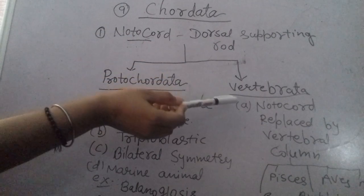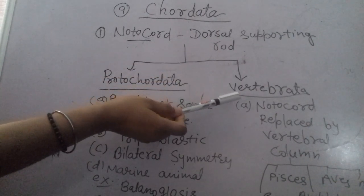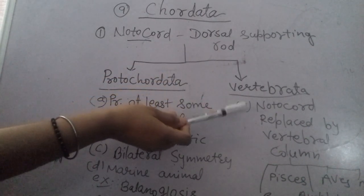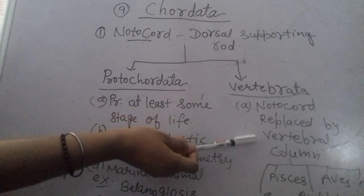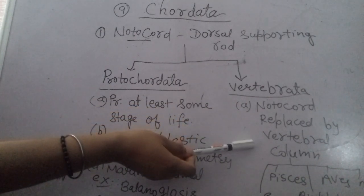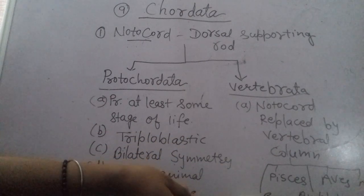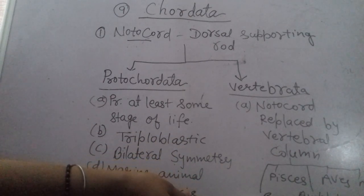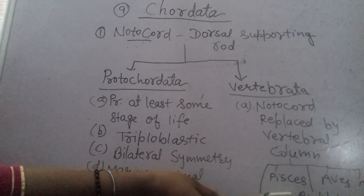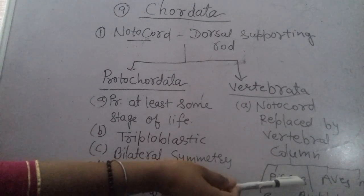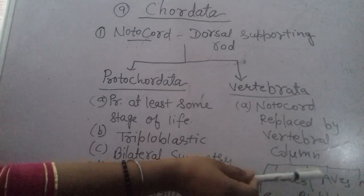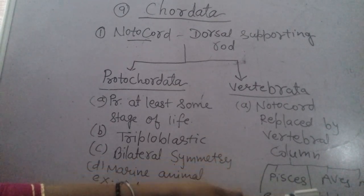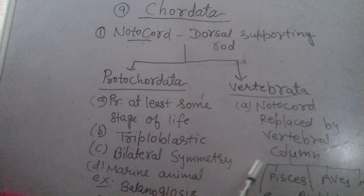In Vertebrata, the notochord is replaced by the vertebral column or backbone. There are five types of vertebrates: Pisces, which are fishes; Reptiles, like snakes; Amphibians, which can live in both water and land; Aves, which are birds; and Mammals, which include human beings. So these are the five types of vertebrates.